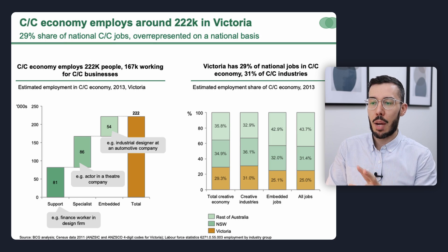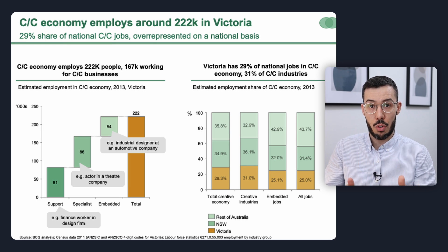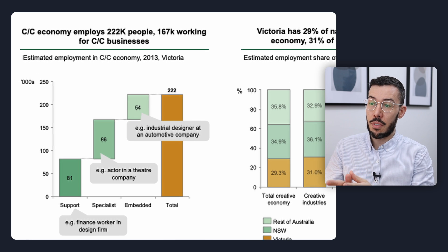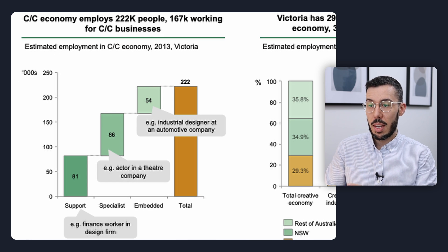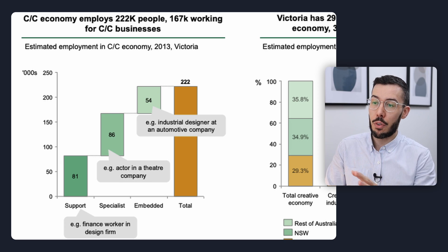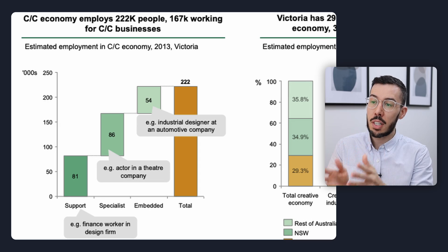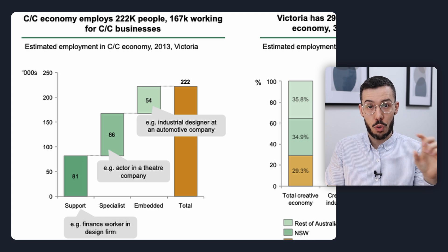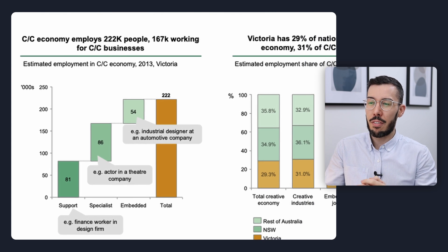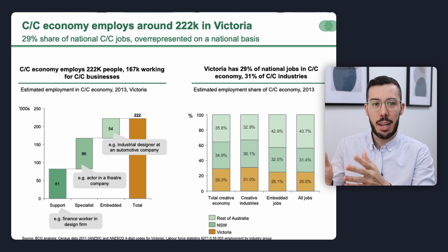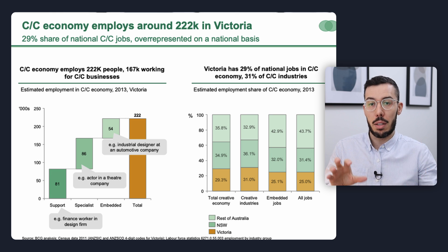Let's look at a BCG example. This slide describes how many jobs the creative economy produces in Victoria, Australia. On the left-hand side there's a waterfall chart that builds up to the total: 81,000 support jobs, 86,000 specialist jobs, and 54,000 embedded jobs. They could have used a stacked column chart, but choosing a waterfall gave them space for callouts shown as gray boxes, and also avoids too much white space on one side, bringing balance to the slide.